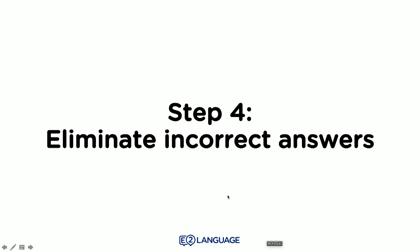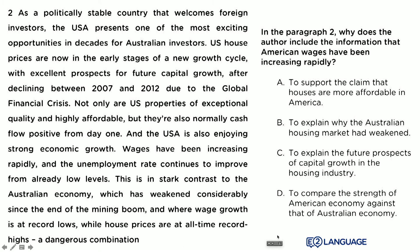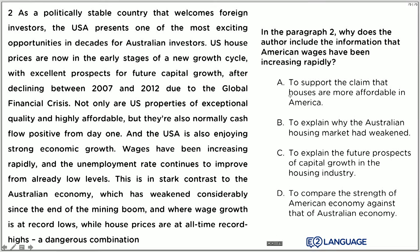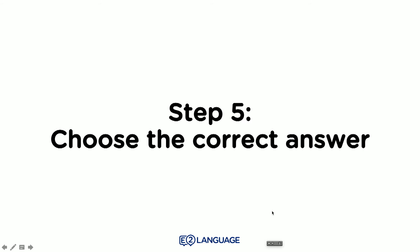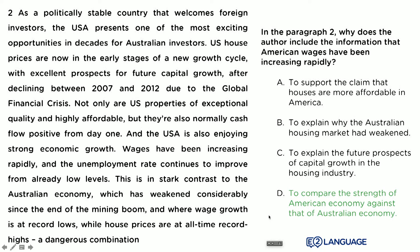Step four: eliminate the incorrect answers. I'm confident eliminating options A, B, and C. Step five: choose the correct answer. It is in fact D — the author included that statement to compare the strength of the American economy against that of the Australian economy.